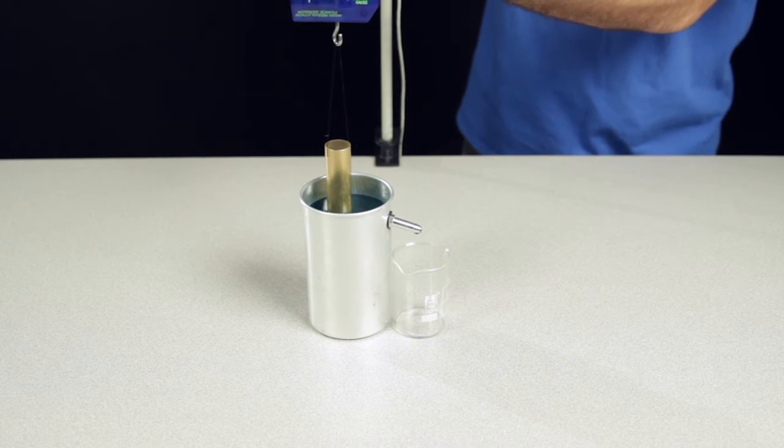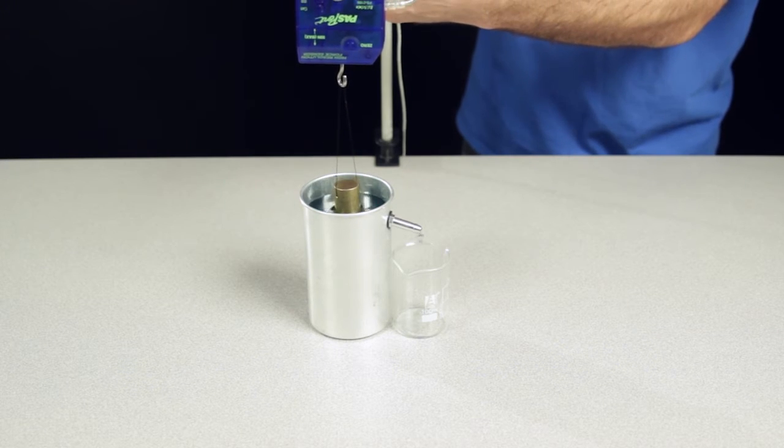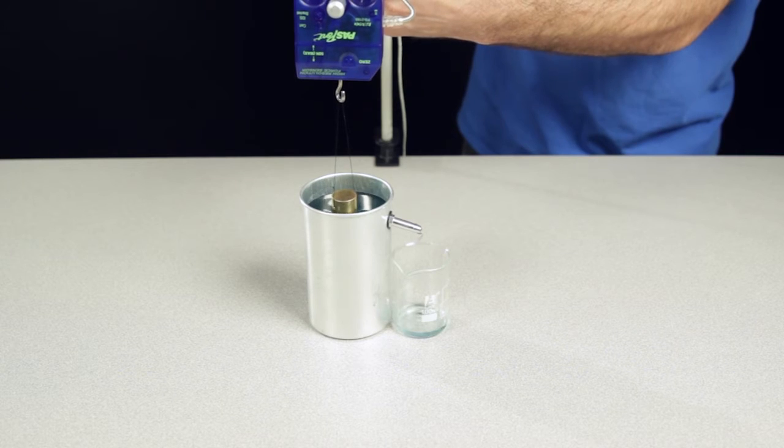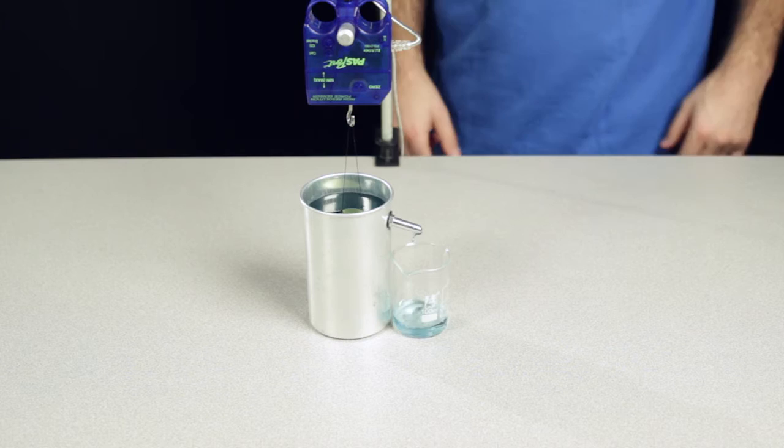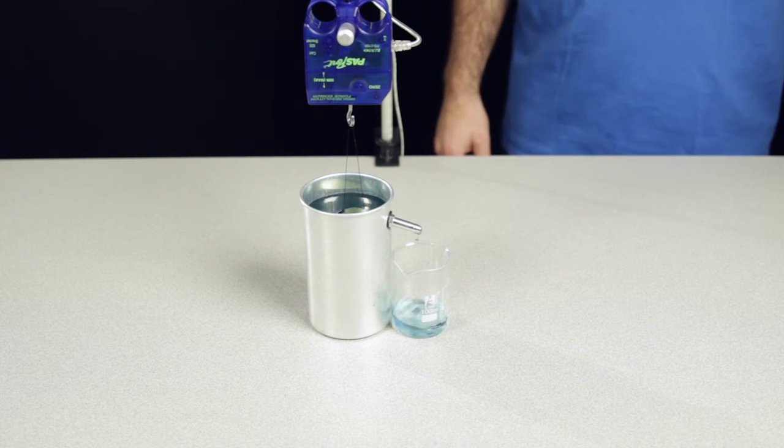Suspend the object in question using a thin piece of thread and then lower the object into the can. Water will pour from the spout into the beaker as the object is submerged. After the object is fully submerged, wait until the water stops pouring from the spout.